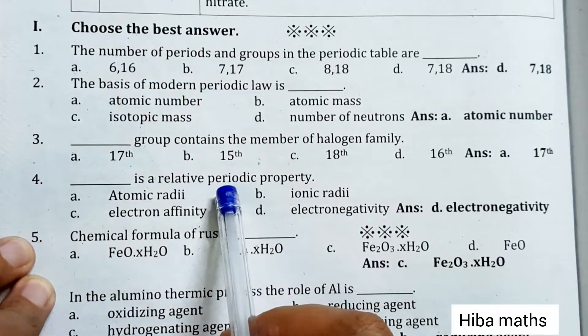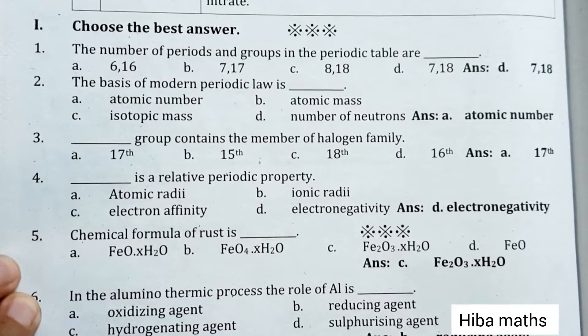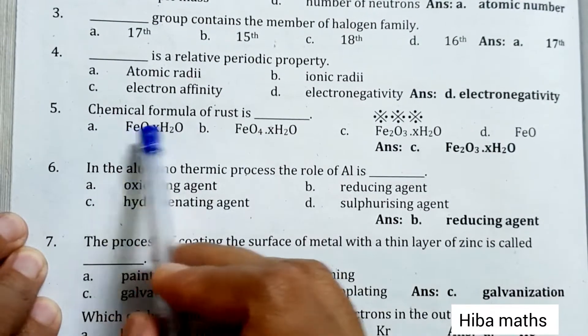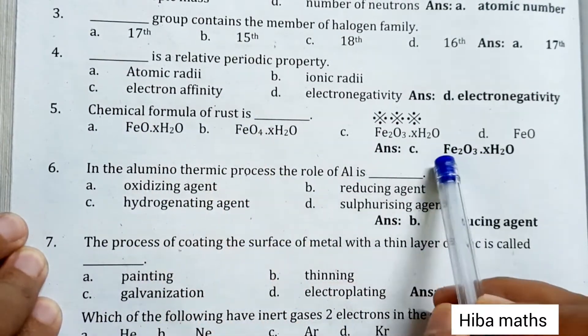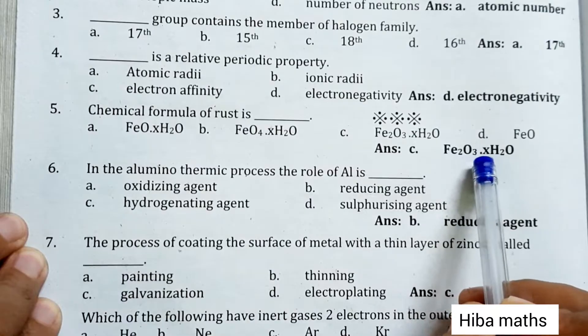Electronegativity is a relative periodic property. The chemical formula of rust is Fe2O3.xH2O.